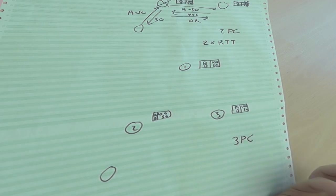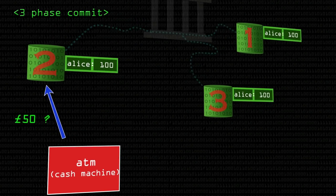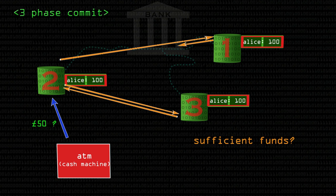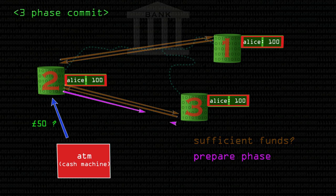What we can do instead is use three-phase commit, which adds an extra step to the two-phase commit. The client comes and says, can we deduct £50 from Alice's bank account? The server asks the other two, as before, and they respond to say Alice has sufficient balance to do so. Now we add an extra phase — this is called the prepare phase. This is where one server tells the others, okay, we're ready to do this, but don't do it just yet.